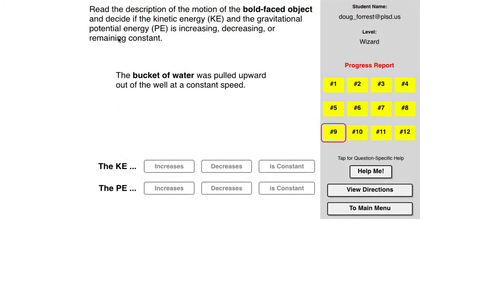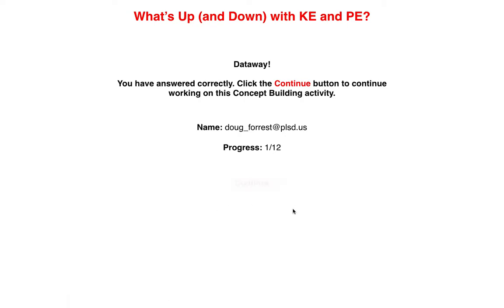Read the description of the bold-faced object and decide if the kinetic energy and gravitational potential energy is increasing, decreasing, or remaining constant. The bucket of water, that's the system, was pulled upward out of the well at a constant speed. If it's at a constant speed, the kinetic energy should be constant. If it's pulled upward, the gravitational potential energy should be increasing. Let's check that answer. Data away.